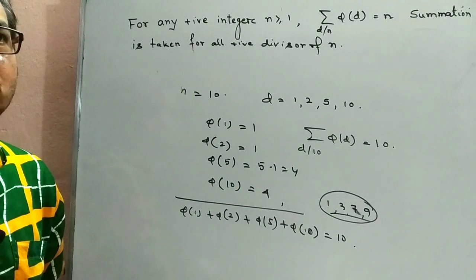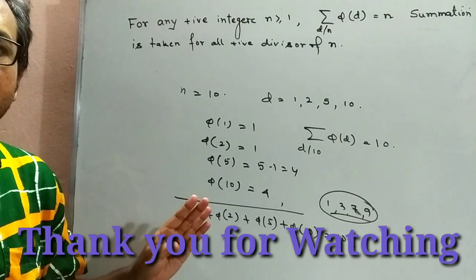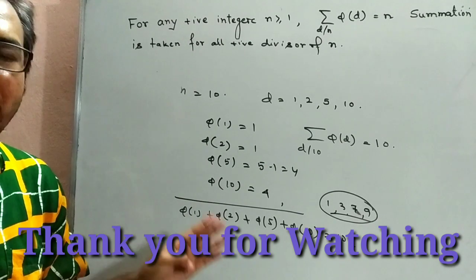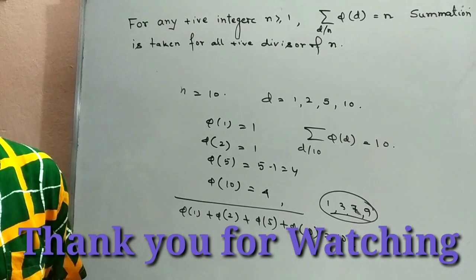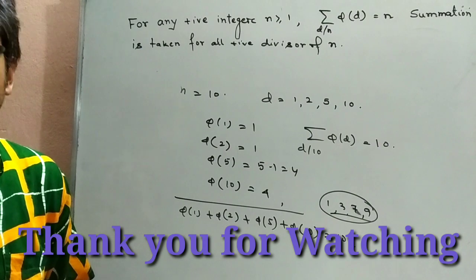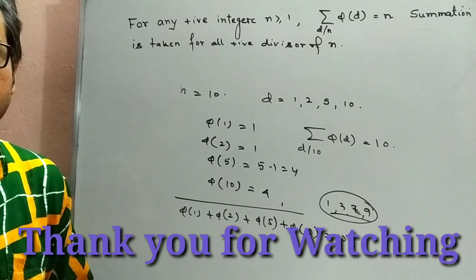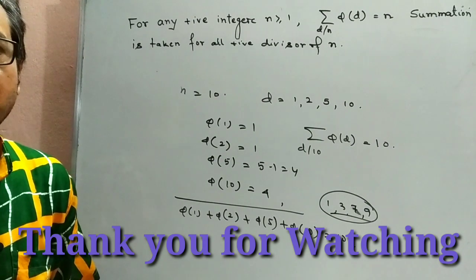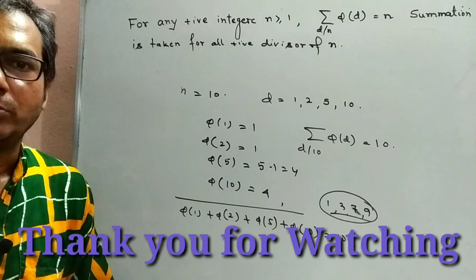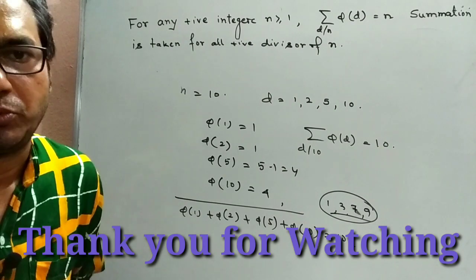So this is a very important property of Euler's phi function, and it is also called Gauss's theorem of number theory. This is the end of today's class. Thank you for watching.